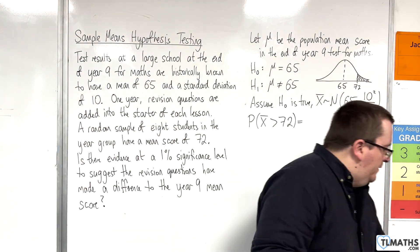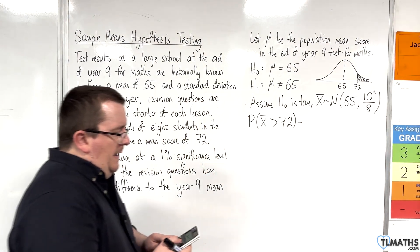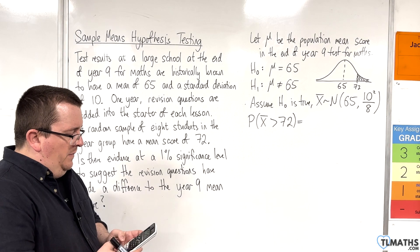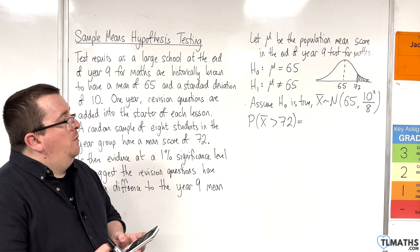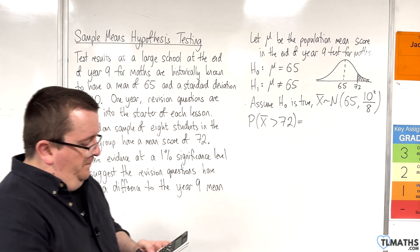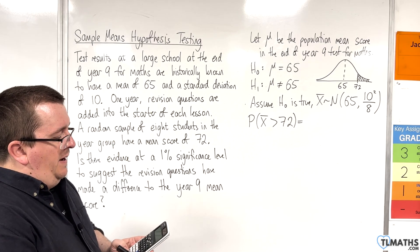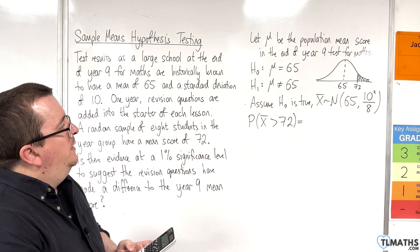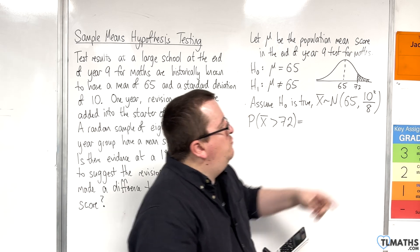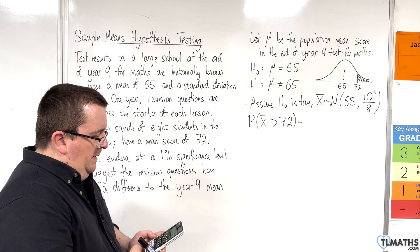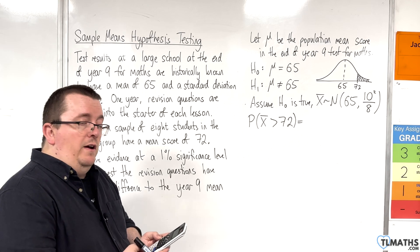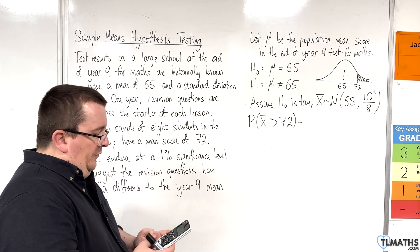So, we're going to go to the calculator, and I'm going to go to number 7, and I want normal CD. So, I want my lower value to be 72, my upper value to be a nice large number. So, sigma is the square root of 10 squared over 8, so 10 divided by the square root of 8, and that's 3.5355, and the mean is 65.